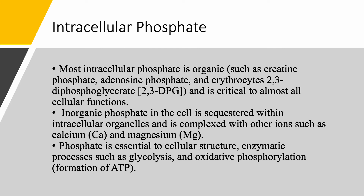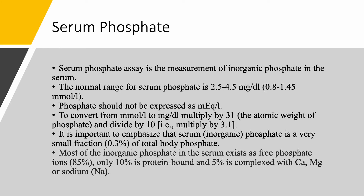Serum phosphate assay is a measurement of inorganic phosphate in the serum. When you order serum phosphate or serum phosphorus, you are measuring inorganic, or mineral, phosphate in the serum. The normal range is 2.5 to 4.5 milligrams per deciliter, or 0.8 to 1.45 millimoles per liter. We should never express phosphate as milliequivalents per liter — use either mg/dL or mmol/L. To convert from millimoles per liter to milligrams per deciliter, multiply by 31 (the atomic weight of phosphate) and divide by 10, or simply multiply by 3.1, or roughly by 3.